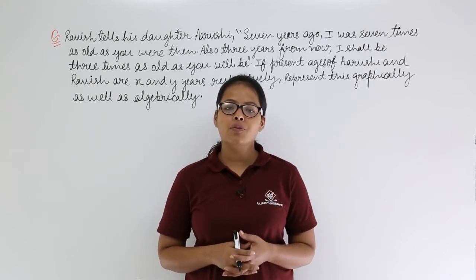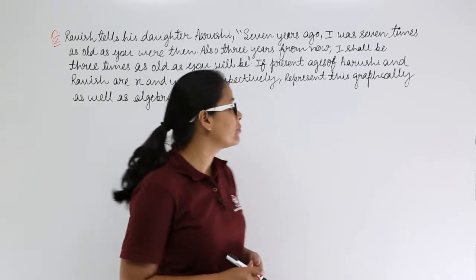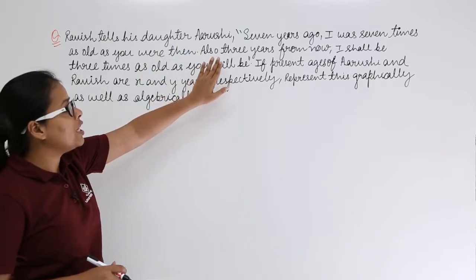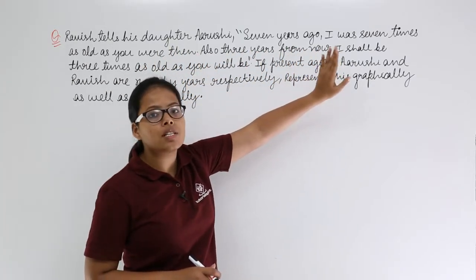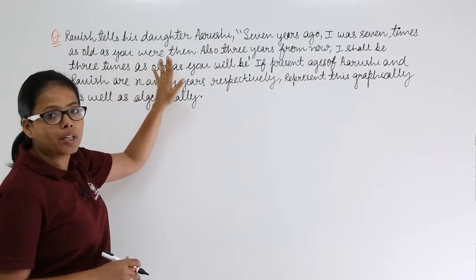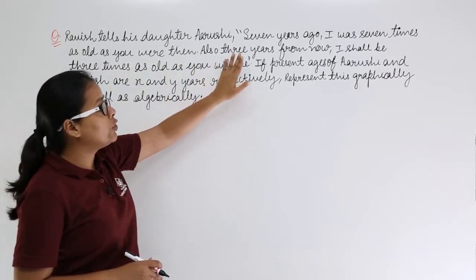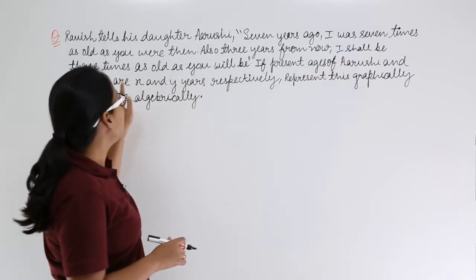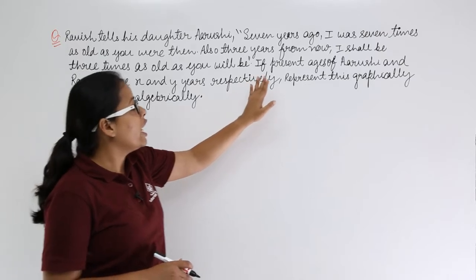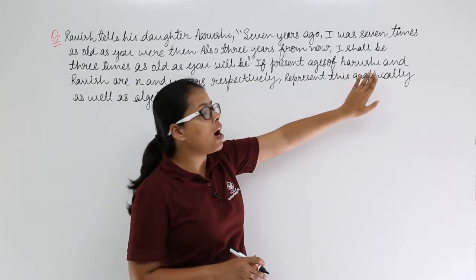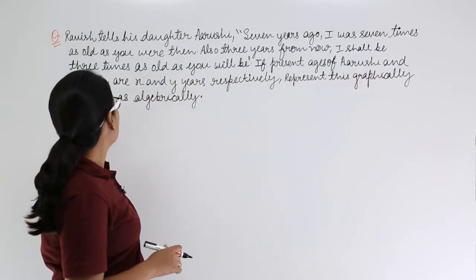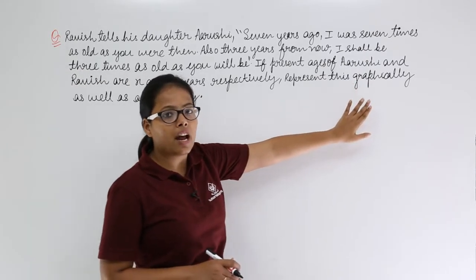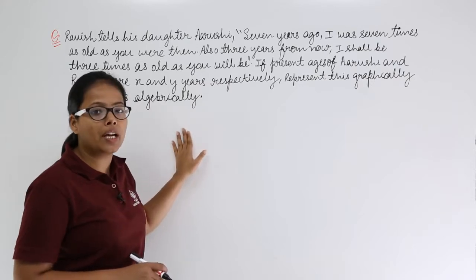Hello guys, let's discuss this problem from R.D. Sharma. Ravish tells his daughter Arushi: seven years ago I was seven times as old as you were then. Also, three years from now I shall be three times as old as you will be. If the present ages of Arushi and Ravish are x and y years respectively, then represent this graphically as well as algebraically.